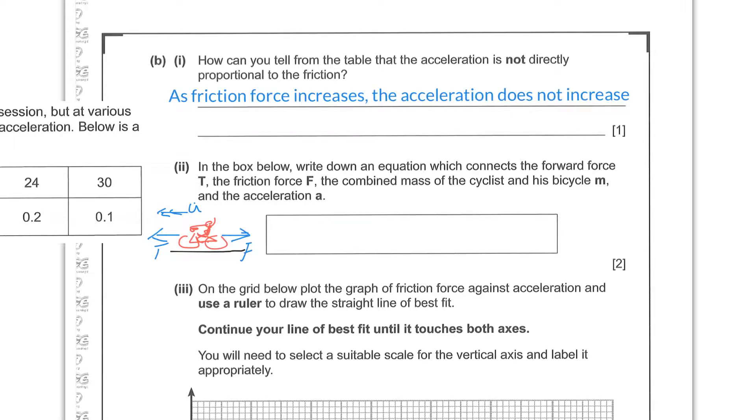And these forces are called T in the forward direction and F in the backward direction. Then we're writing Newton's second law, which is that resultant force in the direction of A equals MA. So the resultant force in the direction of A is going to be T minus F, because T points in the direction of A and F points opposite to the direction of A. So T minus F is the resultant force in the direction of A, and that's equal to MA.